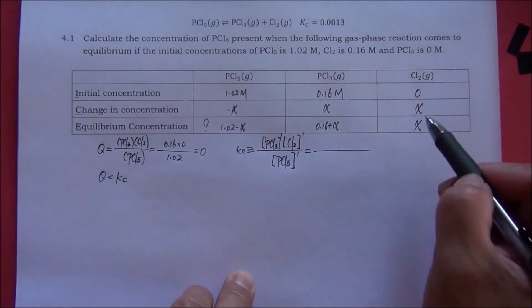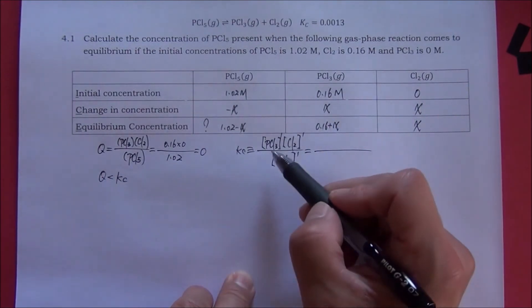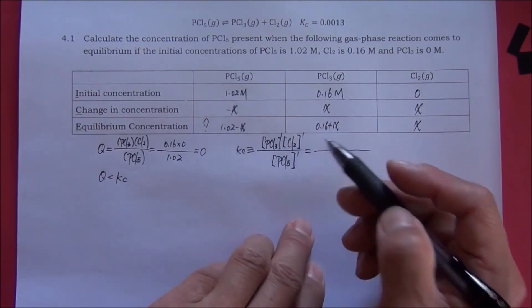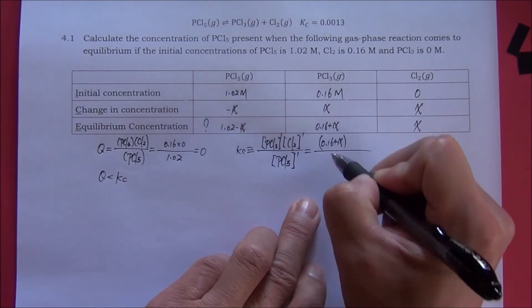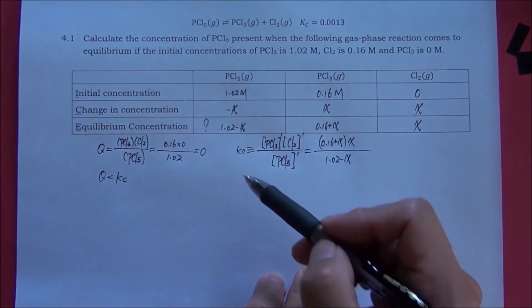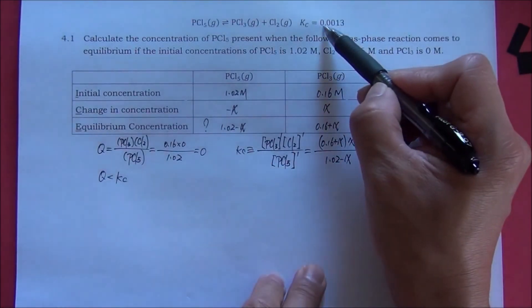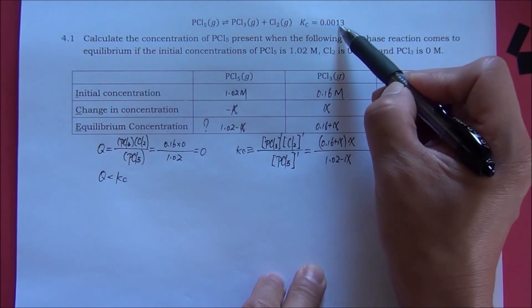Then, we will plug the expressions of each chemical into the equilibrium constant expression to get the equation. And we are already given the value of Kc, which is 0.0013.